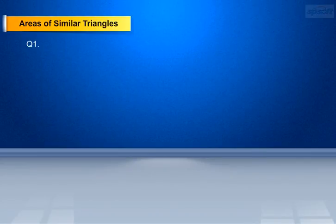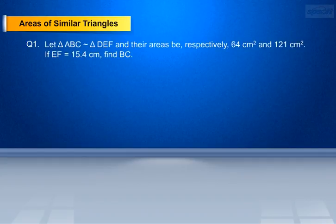Let us have a look at some exercise problems. Question 1: Let triangle ABC be similar to triangle DEF, and their areas are 64 cm² and 121 cm² respectively. If EF equals 15.4 cm, find BC.